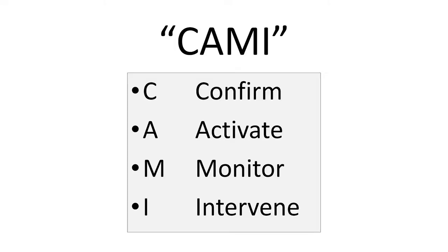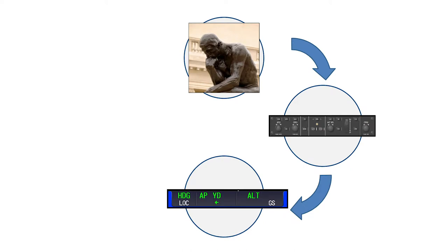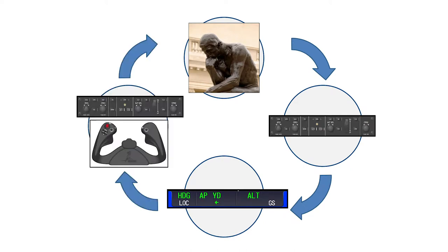Thanks Charlie. Several notable Citation accidents highlight the importance of correct use of the scoreboard, yet in my training and check rides I see far too many pilots either ignoring the information the scoreboard is presenting or not fully appreciating what it is showing. Let's look at how the use of the CAMI acronym can help us. After confirming and activating the necessary mode, the pilot in command should monitor via the scoreboard and intervene as necessary if the modes displayed are not the modes the pilot desires.